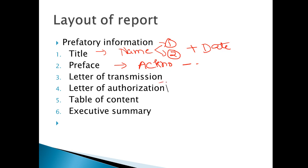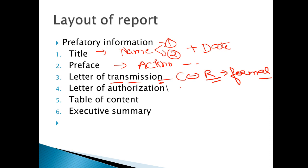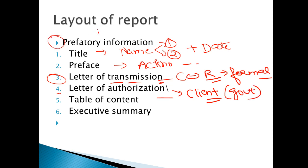Next is the letter of transmission — also called letter of transmittal. This is included when the relationship between the researcher and the client is formal, not informal. In this letter, there is a summarization of the researcher's overall experience on the project — not findings, because findings are part of the end section. Basically, in the letter of transmission, you mention what experiences you gained while doing the research. After that is the letter of authorization, which means the client is authorizing you — yes, you can do the research. For example, for government-related work, you need a letter of authorization. This is also pre-factory information, given at the start.